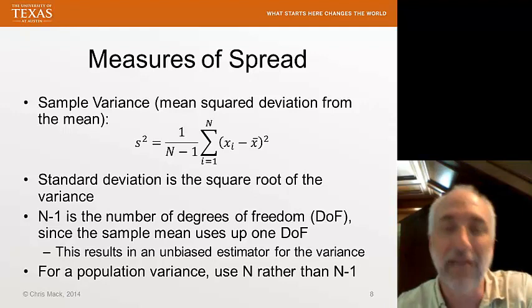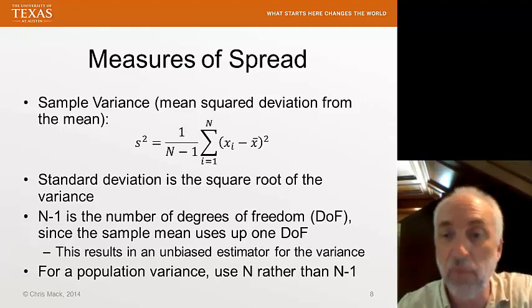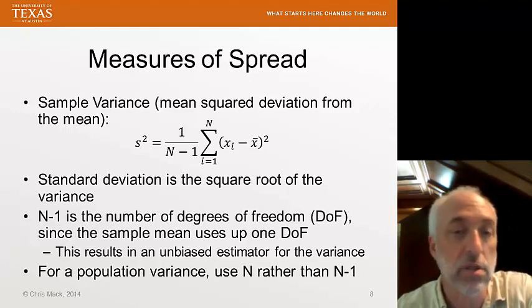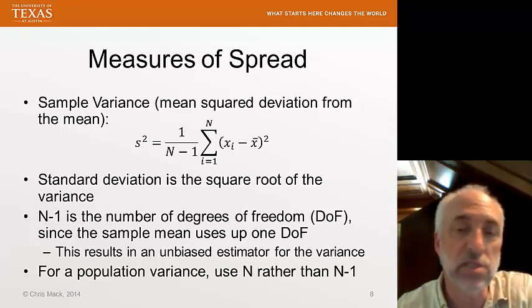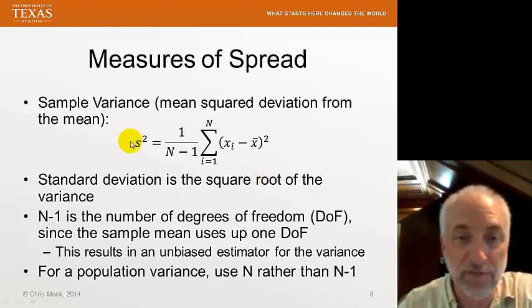Now that rarely happens. We hardly ever have a population at our disposal. Instead, we always have a sample. So we'll use the sample variance for our calculations. Now what is the standard deviation? Standard deviation is nothing more than the square root of the variance. We often use the symbol s for standard deviation, and the variance is s squared.